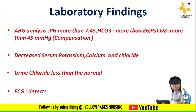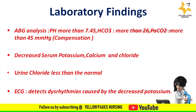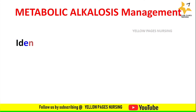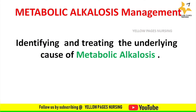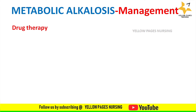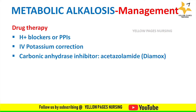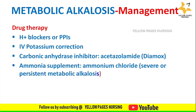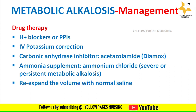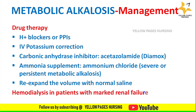ECG changes detect dysrhythmia caused by decreased potassium. Management depends on identifying and treating the underlying causes. General measures include drug therapy with proton pump inhibitors, IV potassium correction, carbonic anhydrase inhibitors (e.g., acetazolamide/Diamox), ammonium chloride supplementation for severe or persistent cases, volume re-expansion with normal saline, and hemodialysis for marked renal failure.